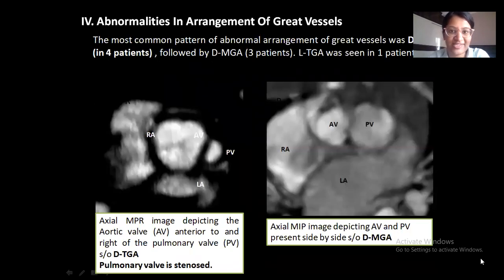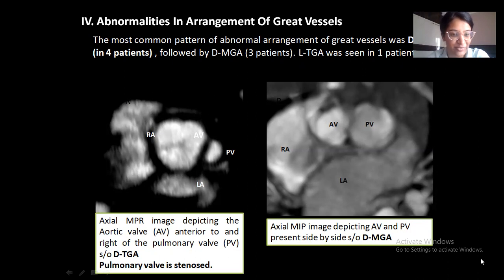Coming to abnormalities in arrangement of great vessels: the most common pattern of abnormal arrangement was D-TGA in four patients, followed by D-NGA in three patients. L-transposition of great arteries was seen in one patient. The first image is an axial MPR image depicting the aortic valve present anterior to and to the right of the pulmonary valve, with pulmonary valvular stenosis, suggestive of D-TGA. The second image is an axial MIP image depicting the aortic and pulmonary valves present side by side, suggestive of NGA.